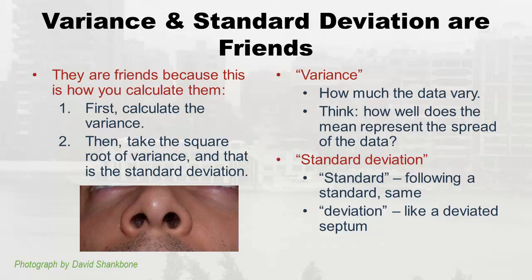Before talking about formulas, I want to set in your head what these words mean. I remember working at a mental health place where our leader said 'I'm applying to the state for a variance,' meaning the state would allow us to vary from the rules. That's what variance is — how the data vary. Think of the spread of the data and how well the mean represents that spread. Variance is a way of representing how the data vary around the mean. Standard deviation: 'standard' means following the same standard, and 'deviation' means to deviate — like a deviated septum, which is crooked. Standard deviation means how much the data deviate around the mean in a standard way.